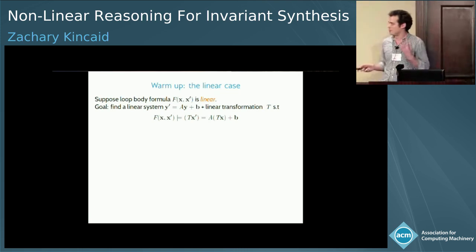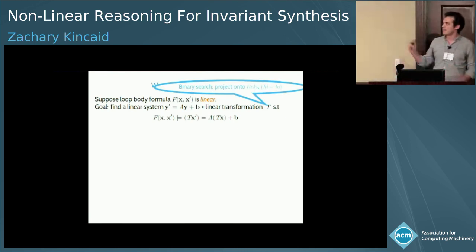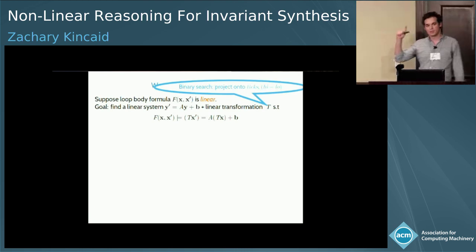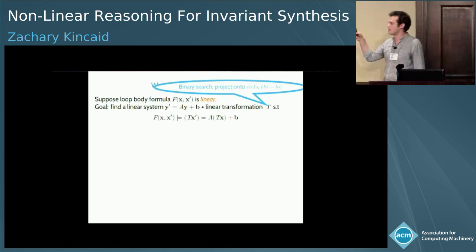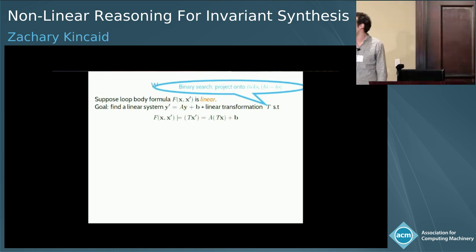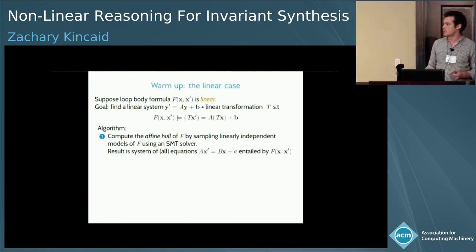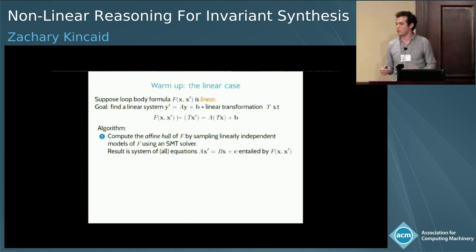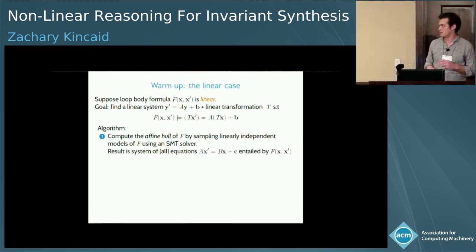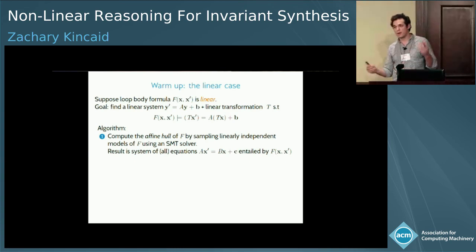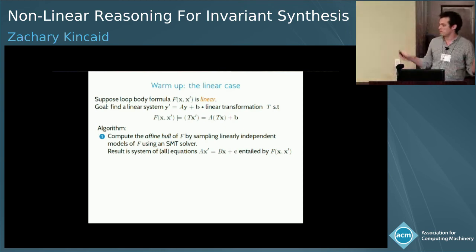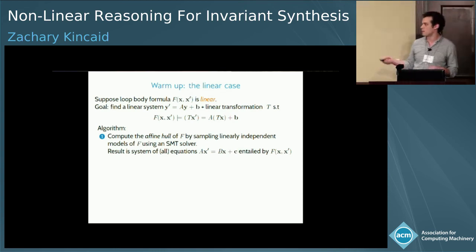By 'approximates,' I mean there's some linear transformation that goes from the x system into the y system such that every step of the transition formula is simulated by a step of this affine transformation. To put this in concrete terms using the binary search example, this linear transformation picks out terms that have recurrences associated with them — it projects the system involving ticks, high, and low onto the system for ticks and high-minus-low. The first step is to compute the affine hull of the formula — the system of all equations implied by the formula — by querying an SMT solver for linearly independent models. What we end up with is a system of equations: Ax' = Bx + C.